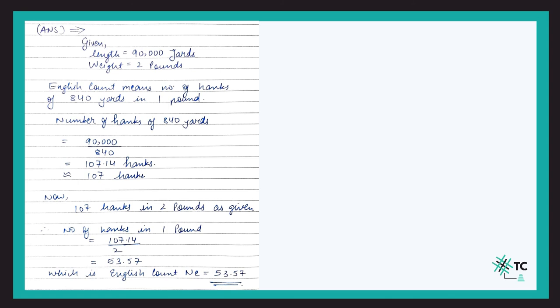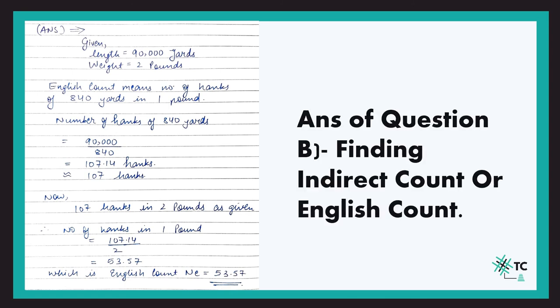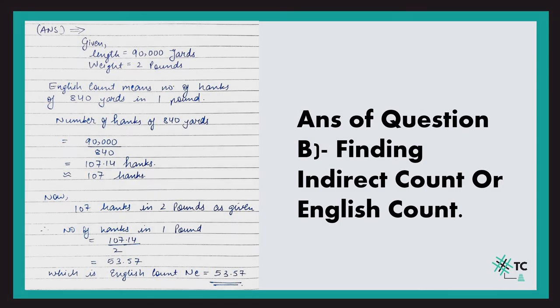So the number of hanks of 840 yards each in one pound of the given yarn is 53.57, and that is our English count — 53.57 Ne.